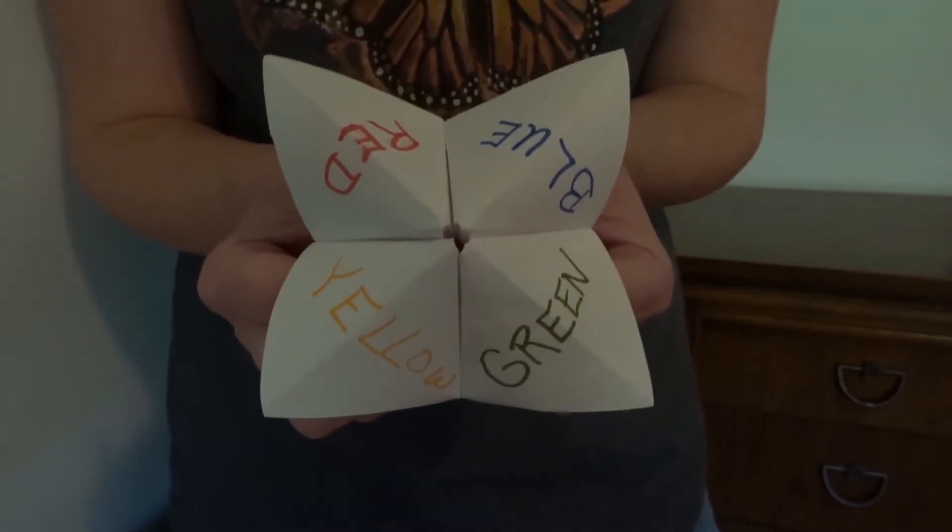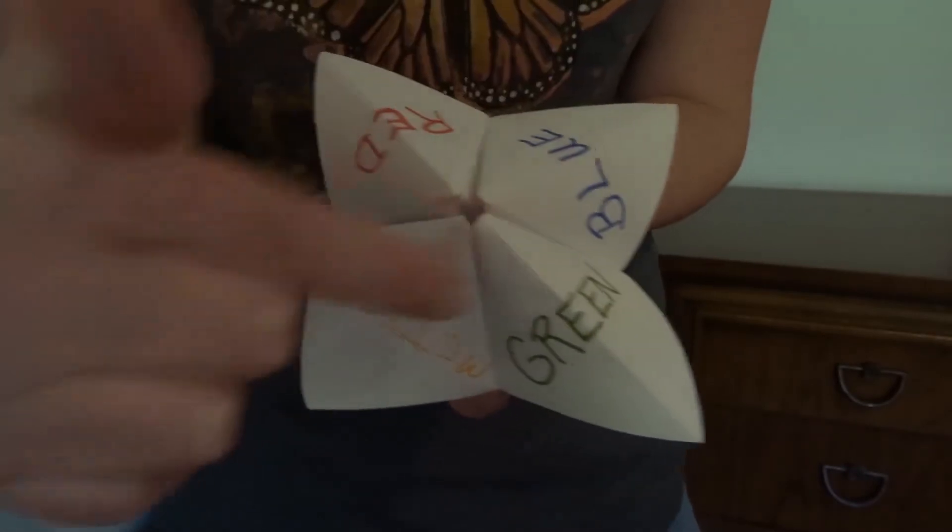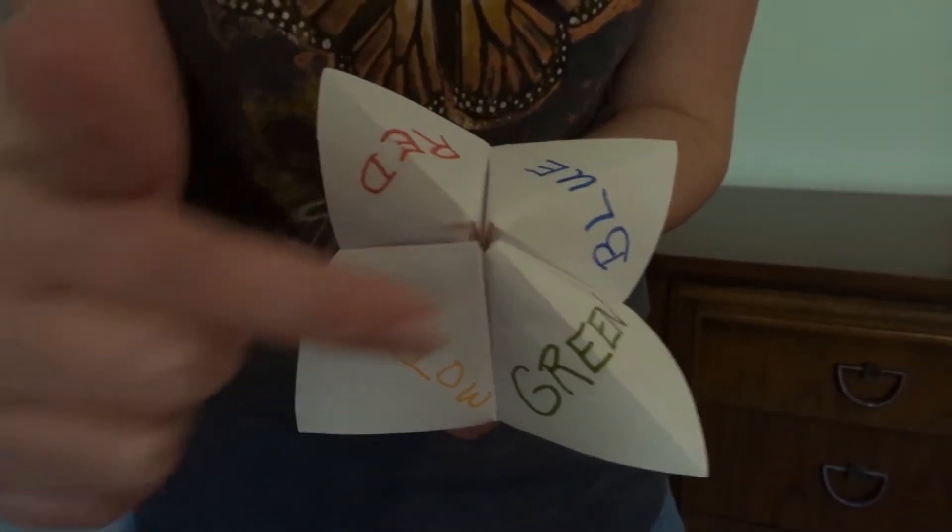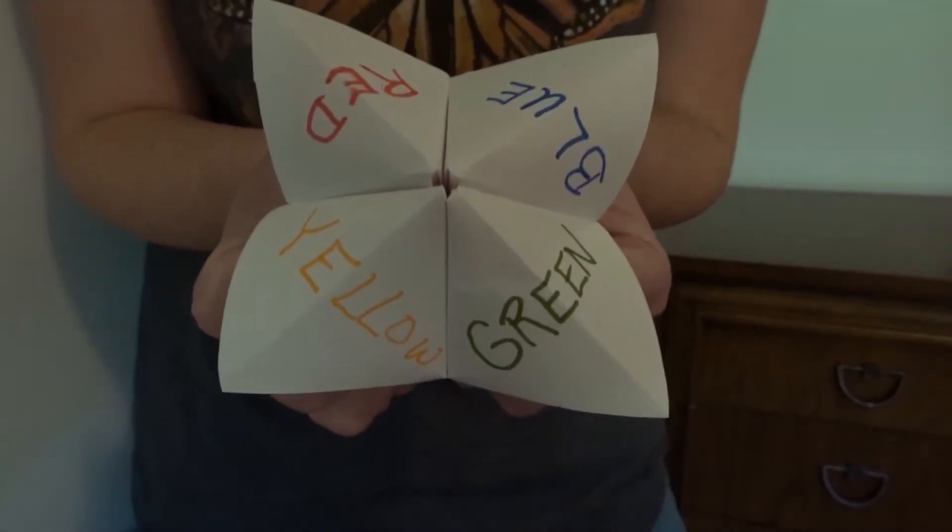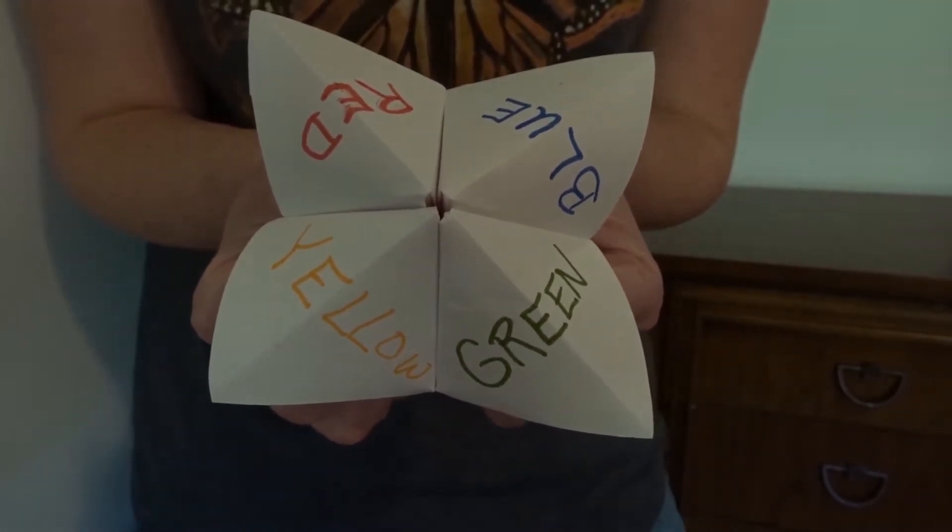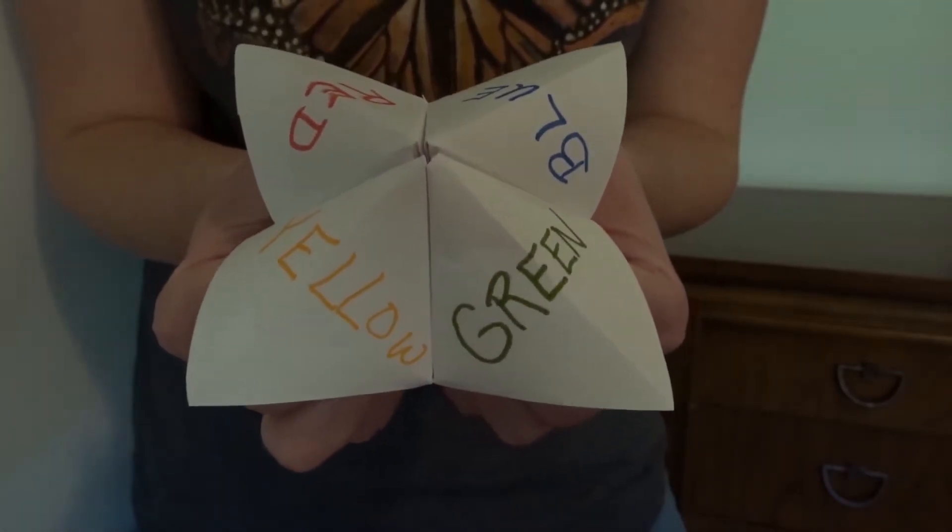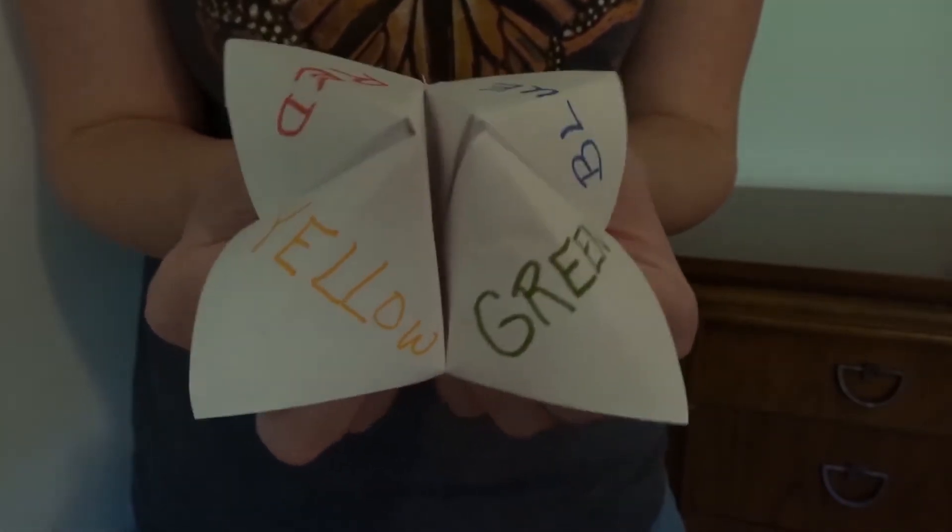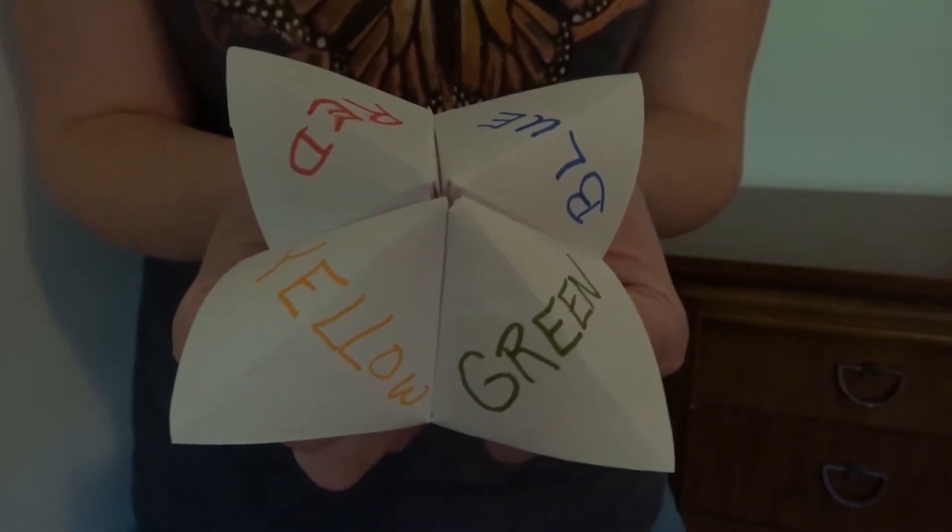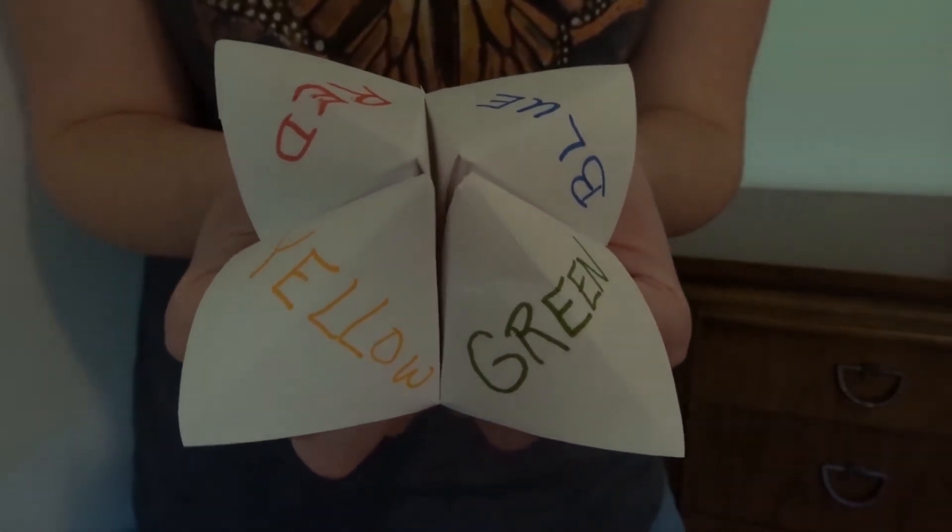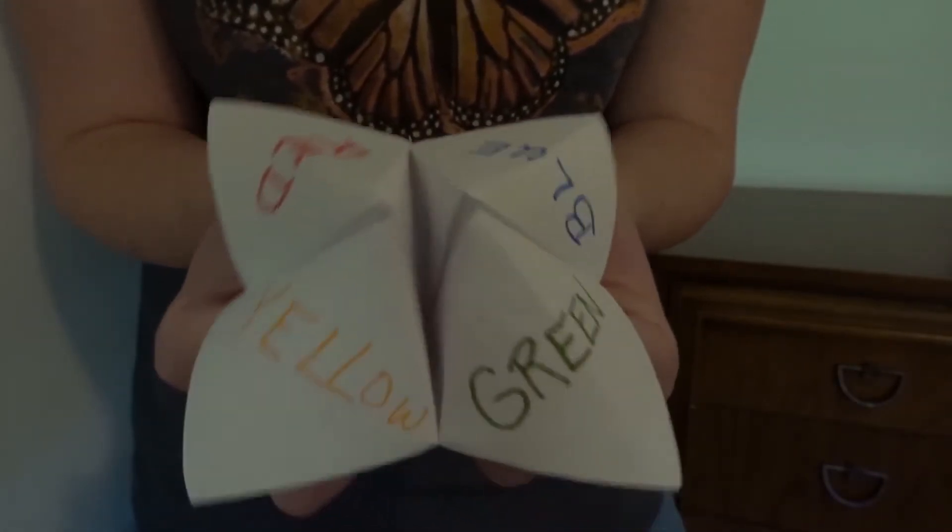The way you play this game is, you see there are different colors on the edges? We need to pick a color. Let's pick blue. And what we're going to do is spell blue and make the chatterbox spell it with us. Blue is B-L-U-E.